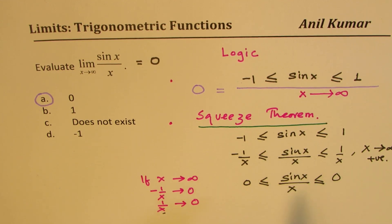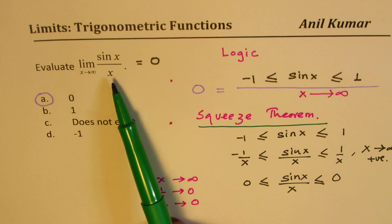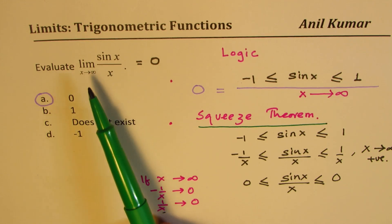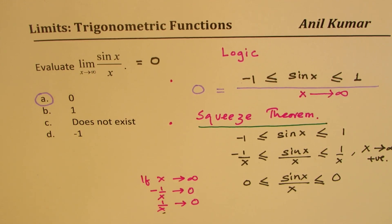So that is how we could find the limit for sin(x) over x when x is approaching infinitely large numbers. I hope that is clear. Feel free to write your comment, share your views, and if you like and subscribe to my videos that would be great. Thanks for watching and all the best.